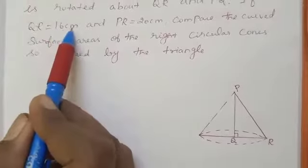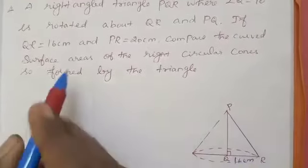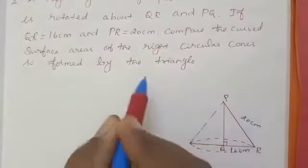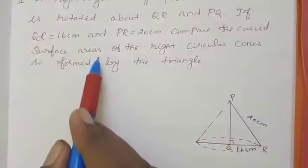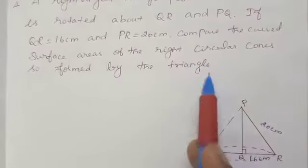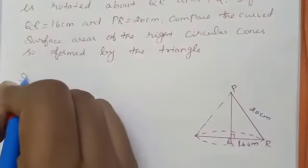If QR is 16 cm and PR equal to 20 cm, compare the curved surface area of a right circular cone so formed by the triangle. We want to compare the right circular cone. Solution.